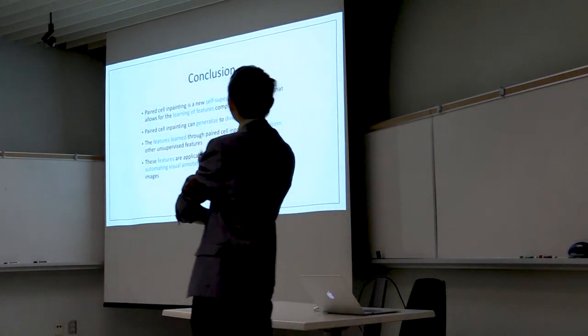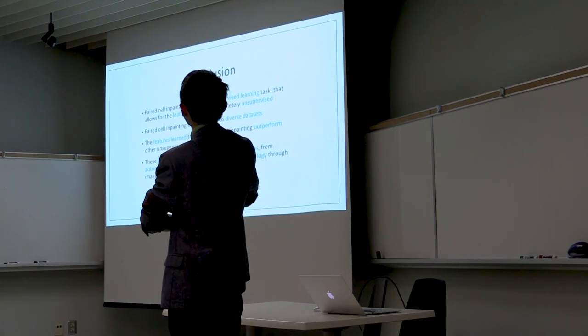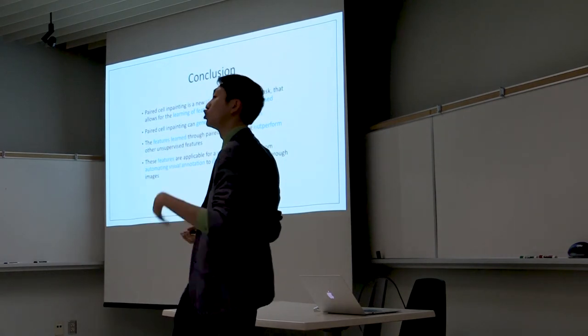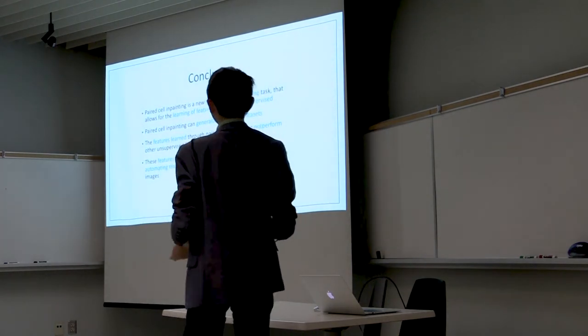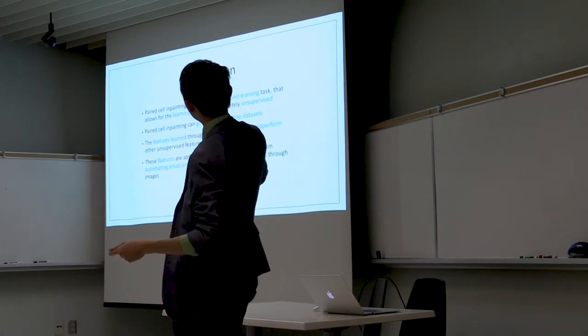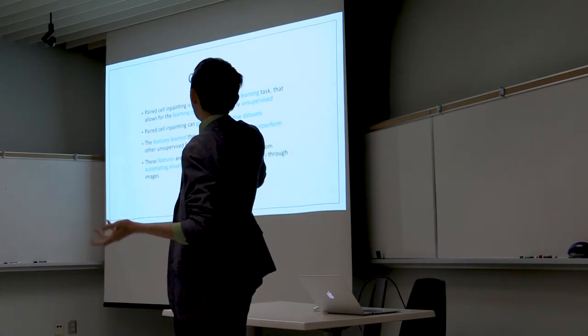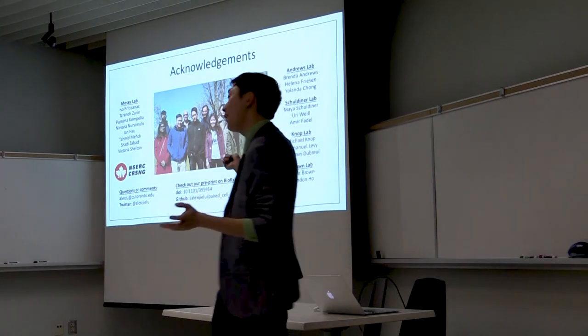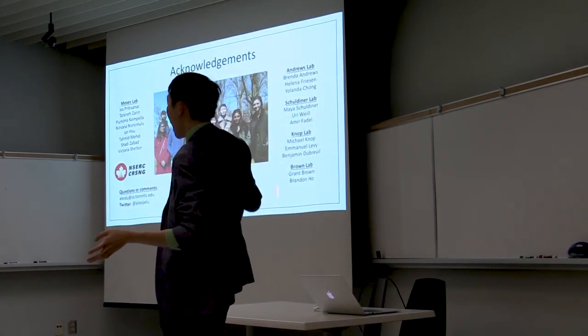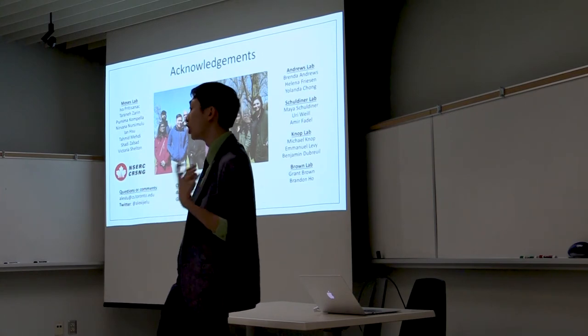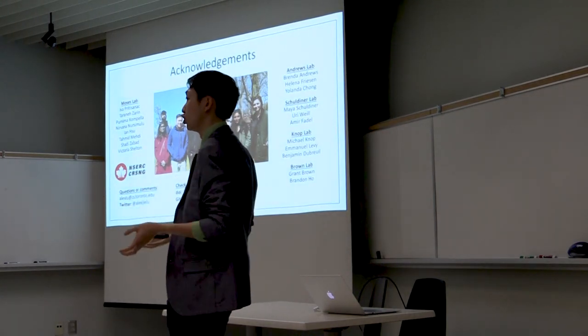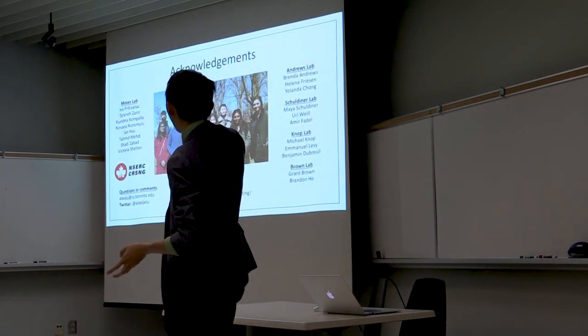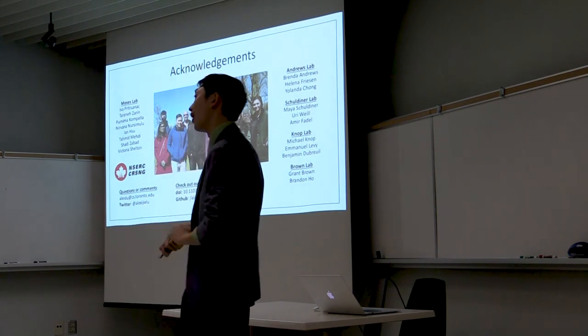So in conclusion, I introduced you to a new self-supervised task that allows for learning features completely unsupervised. It can generalize to different datasets. I showed you three different datasets which we applied the features on, and we were able to get very good results. The features learned through pair self-imputing outperform other unsupervised features, and they were useful for many applications, automating visual analysis, discovering new biology through images. So a special thank you to my lab, it's a really great and diverse bunch, but also thank you to collaborators. One of our goals is to make sure this method generalizes, and this involves getting data from a lot of different sources, so this is not quite possible without the data. And if you're interested, you can check out our code and our preprint on bioRxiv.